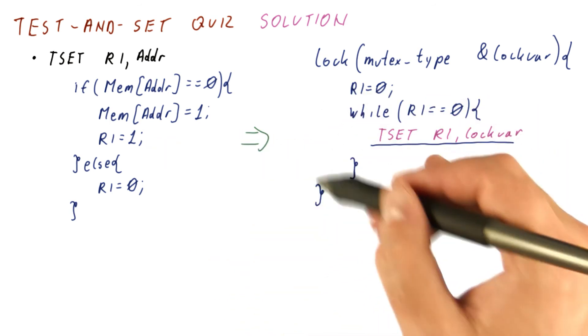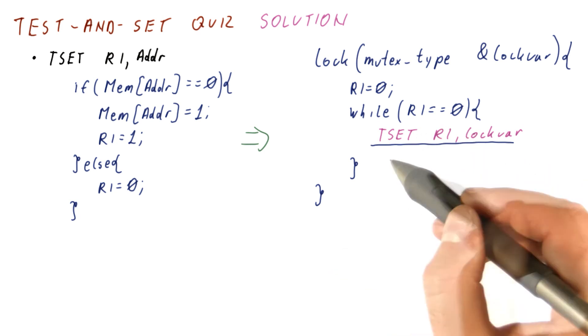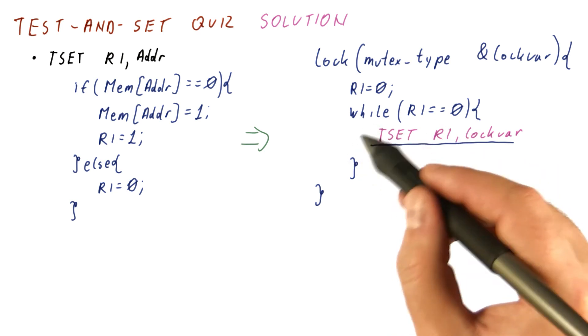So we will only exit this lock function once we acquire the lock, and we will wait here as long as the lock is not available.